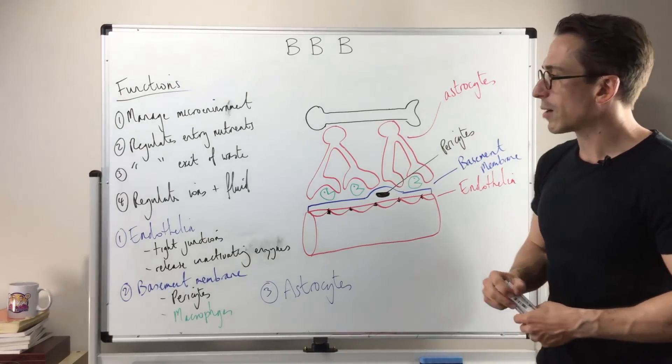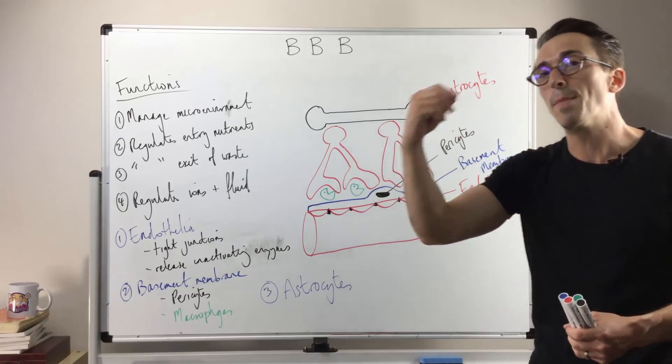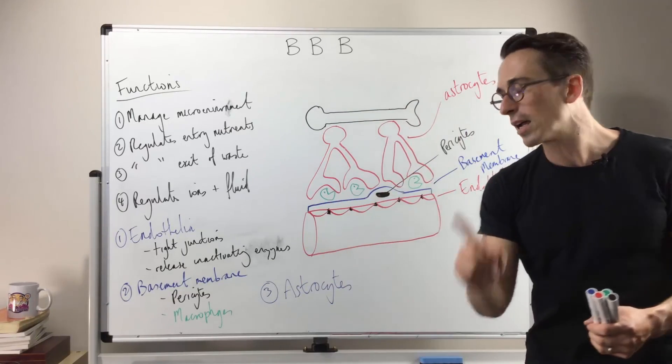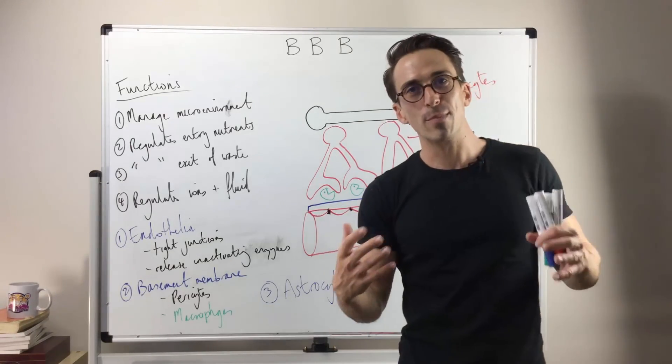So just as an overall summary, the three layers are endothelia, second layer basement membrane or basal lamina, and the third layer is that of the astrocytes. And this is a quick run through of the blood-brain barrier.